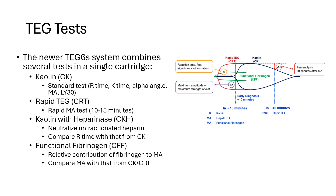The last test is the functional fibrinogen test, the CFF. This combines tissue factor for rapid activation — which ignores coagulation kinetics — with abciximab, a GP2B-3A inhibitor, to block platelet contribution to clot strength. When comparing the max amplitude results of CFF to CK or CRT, the relative contributions of fibrinogen and platelets can be discerned.